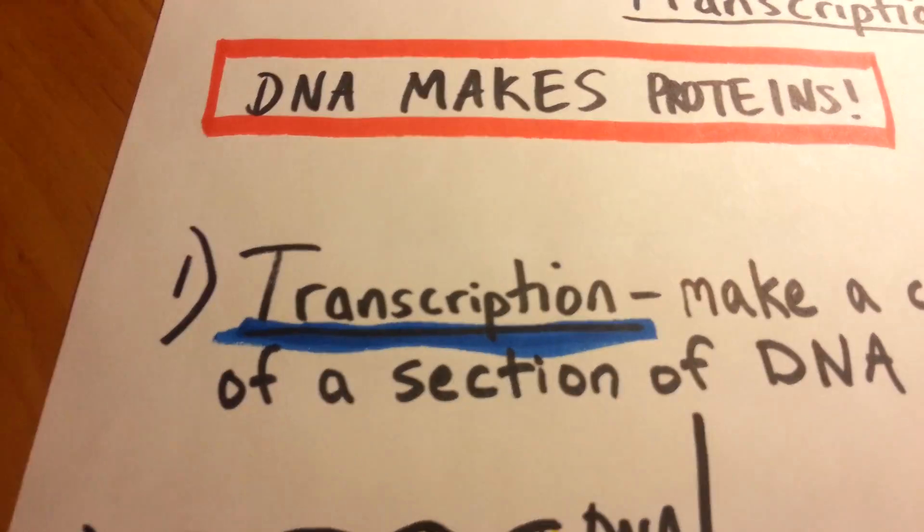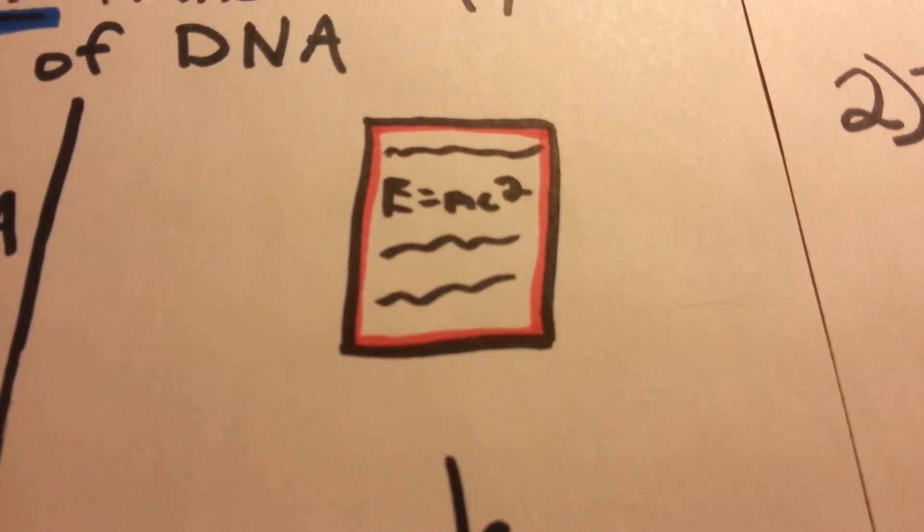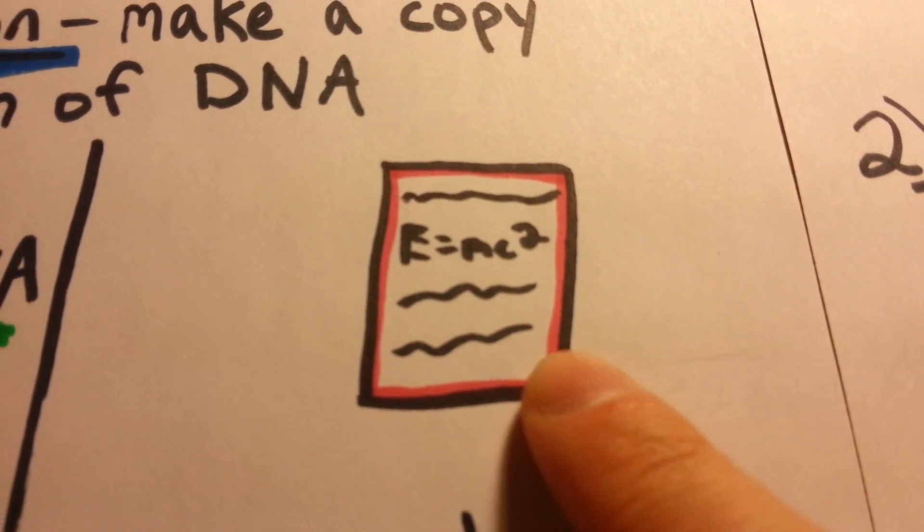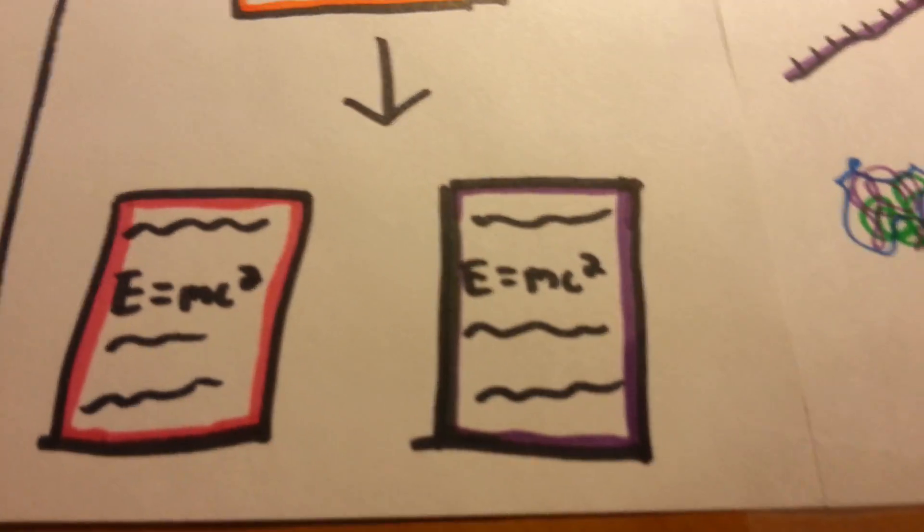You can sort of think of transcription like this, where we have a paper, a really important paper with a lot of important words. E equals MC squared. Pretty important. Run that through a copier, and boom! We're left with two copies. Only one is a little bit different than the original.